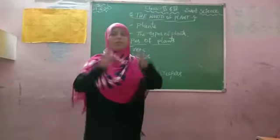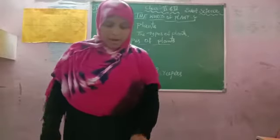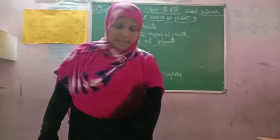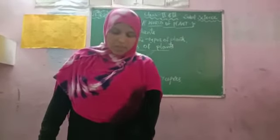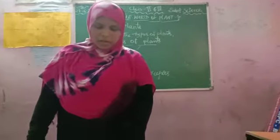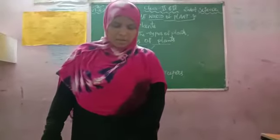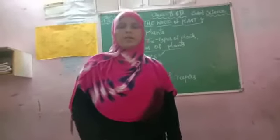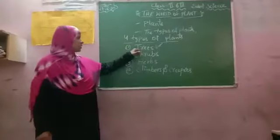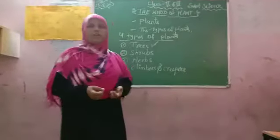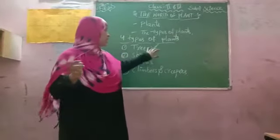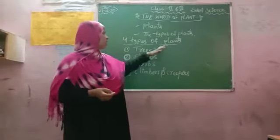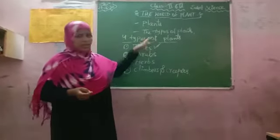A tree is a very big, tall, and strong plant. Trees have a trunk and many branches. They live for many years. Birds, animals, and insects live in trees. Trees are very strong and very tall. They can live for hundreds of years.